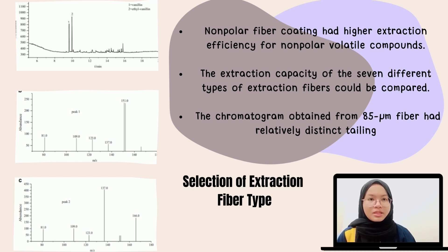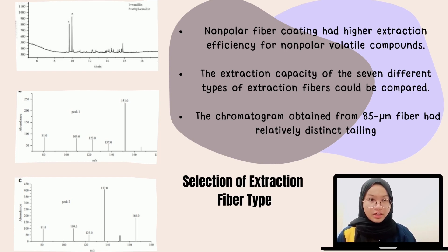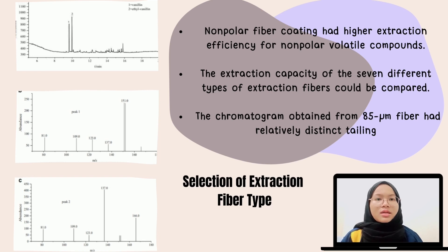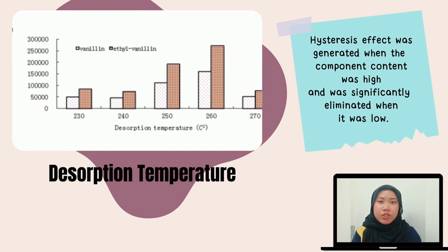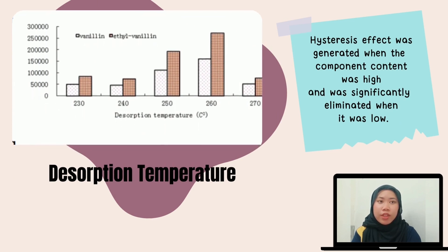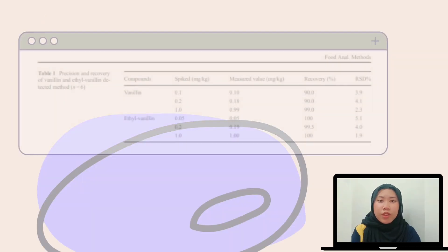Under these conditions, the extraction effects of 7 different types of extraction fibers on a matrix standard solution were tested and the results are shown. The extraction capacity of the 7 different fiber types was compared according to the amount of extracted vanillin and ethyl vanillin, chromatographic peak resolution, and peak shape. The analytes obtained from the 7 fiber types were well separated. However, the chromatogram obtained from one fiber type had relatively distinct tailing, mainly because that extraction fiber had strong absorbability to the tested components. During desorption, a hysteresis effect was generated when the component content was high and was significantly eliminated when it was low.